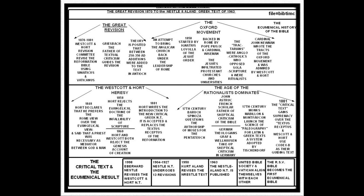First, we begin with the Great Revision. Look at the subtitles here — there are six subtitles to this ecumenical history. We're going to go through the Great Revision, the Oxford Movement, the Westcott and Hort Heresy, the Age of Rationalists, and the Ecumenical Result.